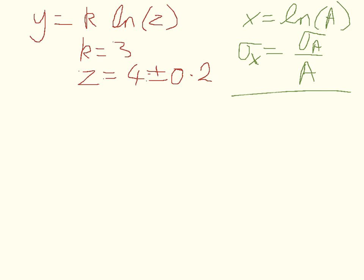And we can also find, for multiplying by constant, that if x equals some constant c times a, then sigma x is just c sigma a. So these are the two equations we need.